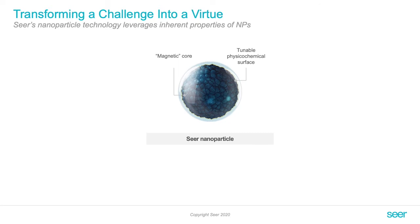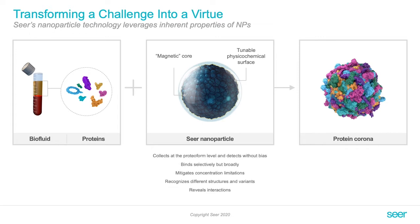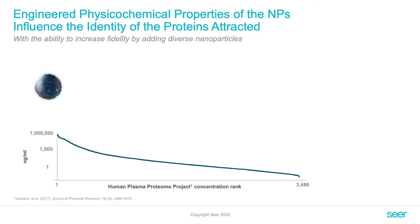We can engineer the surface of these particles. And when they are introduced into the biological matrix, they in a very defined way start to assemble this protein corona. That allows us to reproducibly assemble proteins around the nanoparticles. This process is mainly driven by affinity, which means we can pull up proteins that are very low abundant when they have a high affinity to that particle.